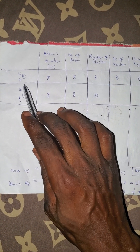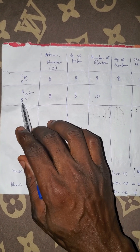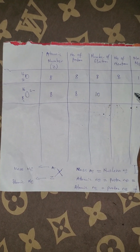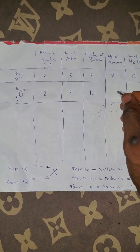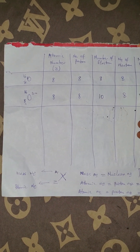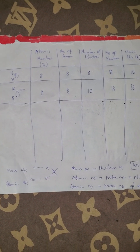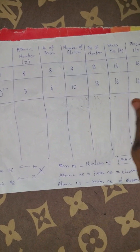Gaining two electrons makes the electron number here 10. The neutron number equals mass number minus atomic number, which is 16 minus 8, giving 8. The mass number is 16 and the nuclear number is the same as mass number, which is also 16.